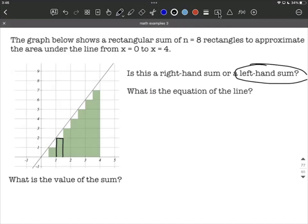Now if the rectangles were drawn up from the right-hand side and then touch the graph and then carry over to the left-hand side, that would be a right-hand sum.